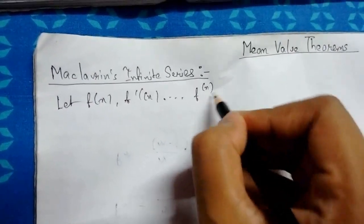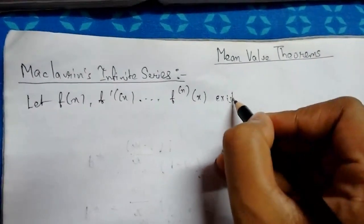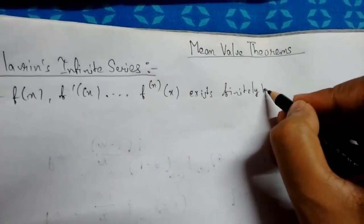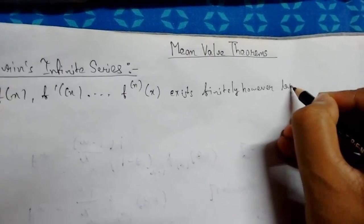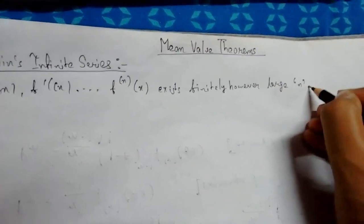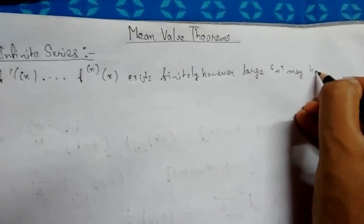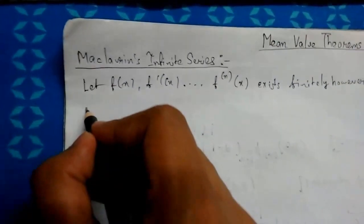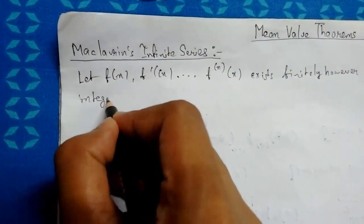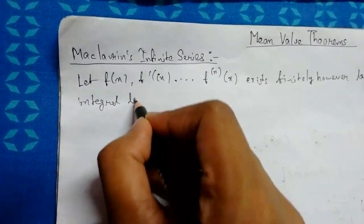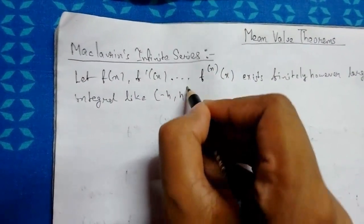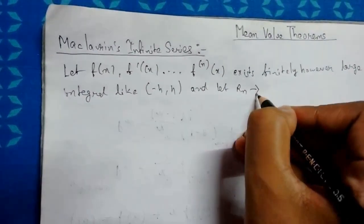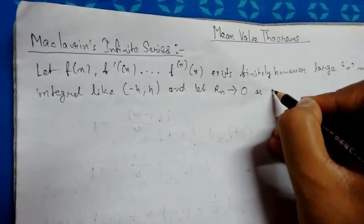f^(n)(x) exist finitely, however large n may be, in any integral interval like (-h, h), and let r_n tending to 0 as n